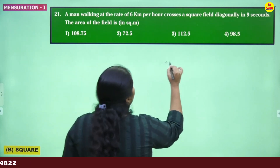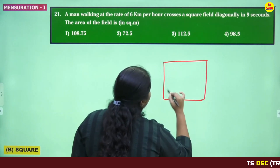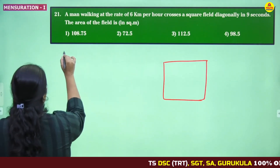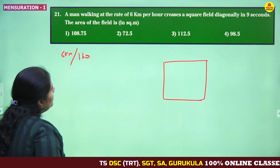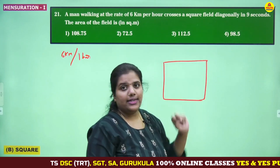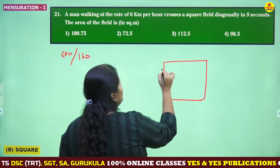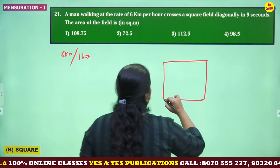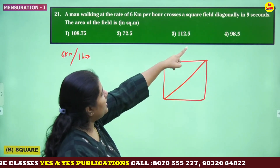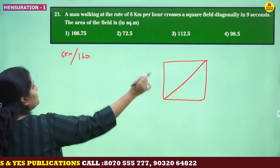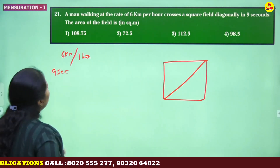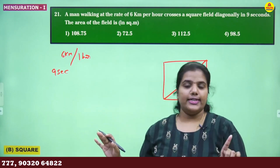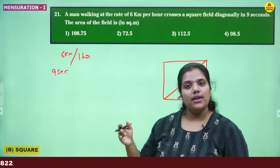So what is the basic information given here? Here is the square field. A man is walking at the rate of 6 kilometers per hour. How is he walking? He is not walking along the side of the square field — he is walking diagonally. This is the diagonal. Diagonally in 9 seconds. We have to calculate the area. To calculate the area of a square, either the side or the diagonal must be known. Let us see what we can find with the given information.